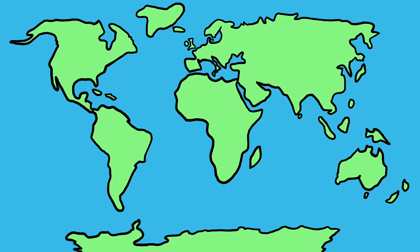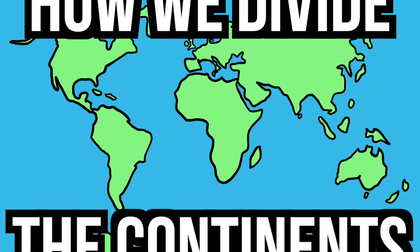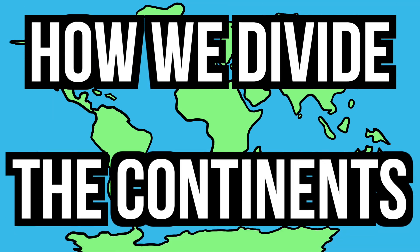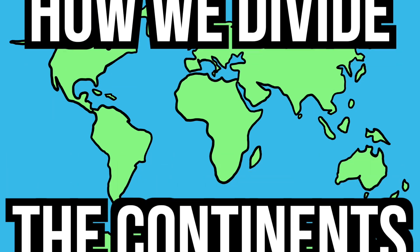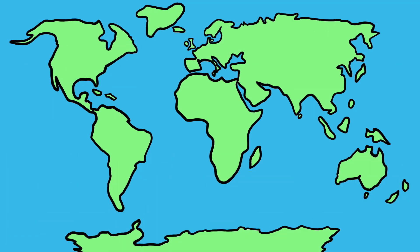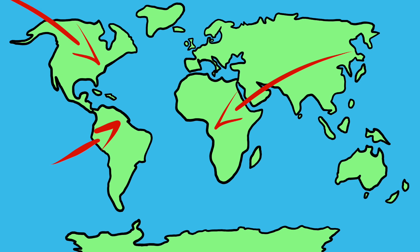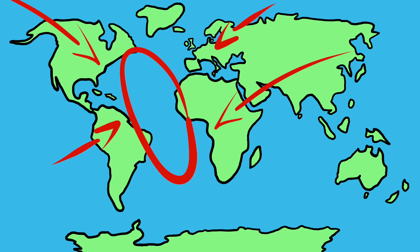We all know that Earth has seven continents, right? Well, it turns out we can make it a lot more complicated than that. Our continents can be divided in many ways. A continent is usually defined as the continuous and large area of land that is typically separated from other areas of land by a body of water.